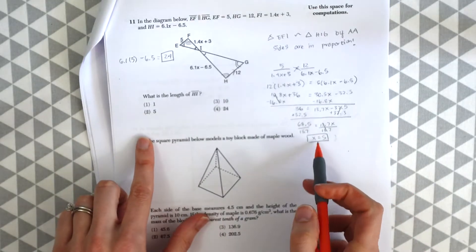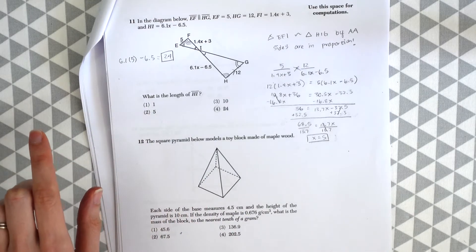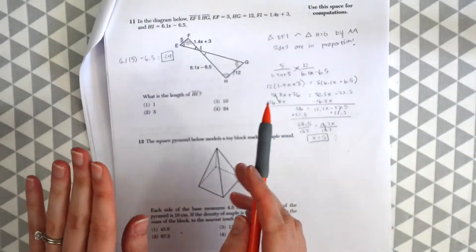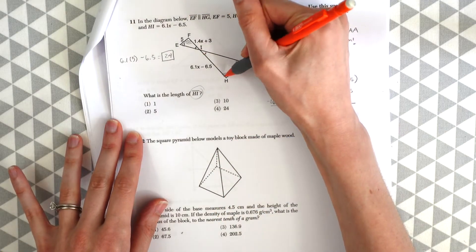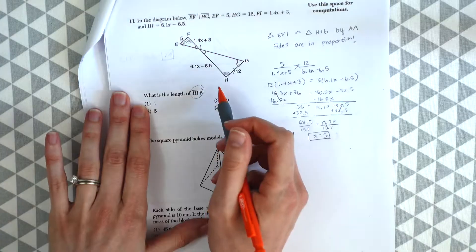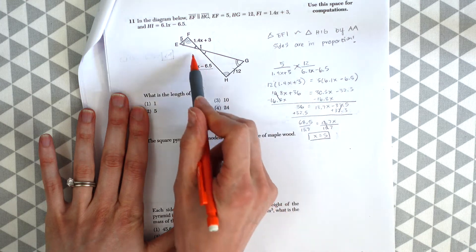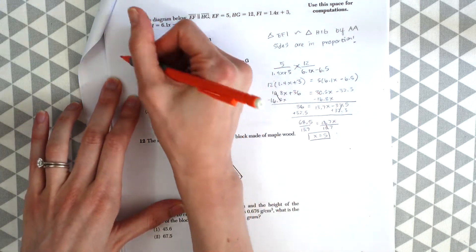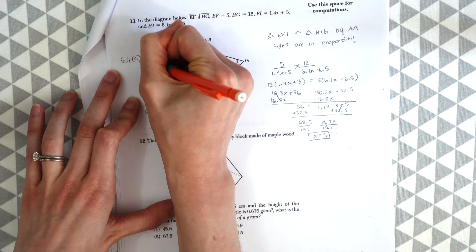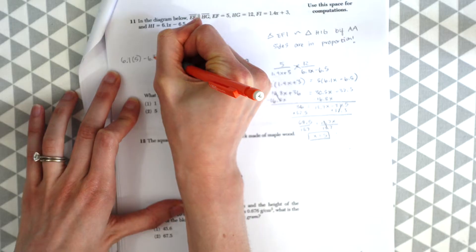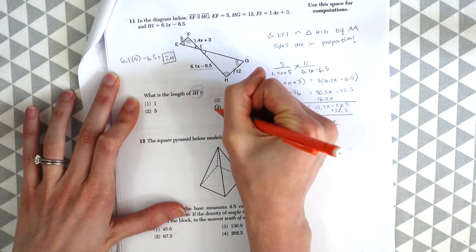So even though we got 5, we want to be careful and look back at our question. Because 5 is an answer choice, we might rush to circle that choice number 2 as our answer. But be careful because remember, they're looking for the length of HI. So what we actually want to do is plug in 5 into the length for HI, 6.1X minus 6.5. So we have 6.1 times 5 minus 6.5, which gives us 24. And that's actually going to be our answer, choice number 4.